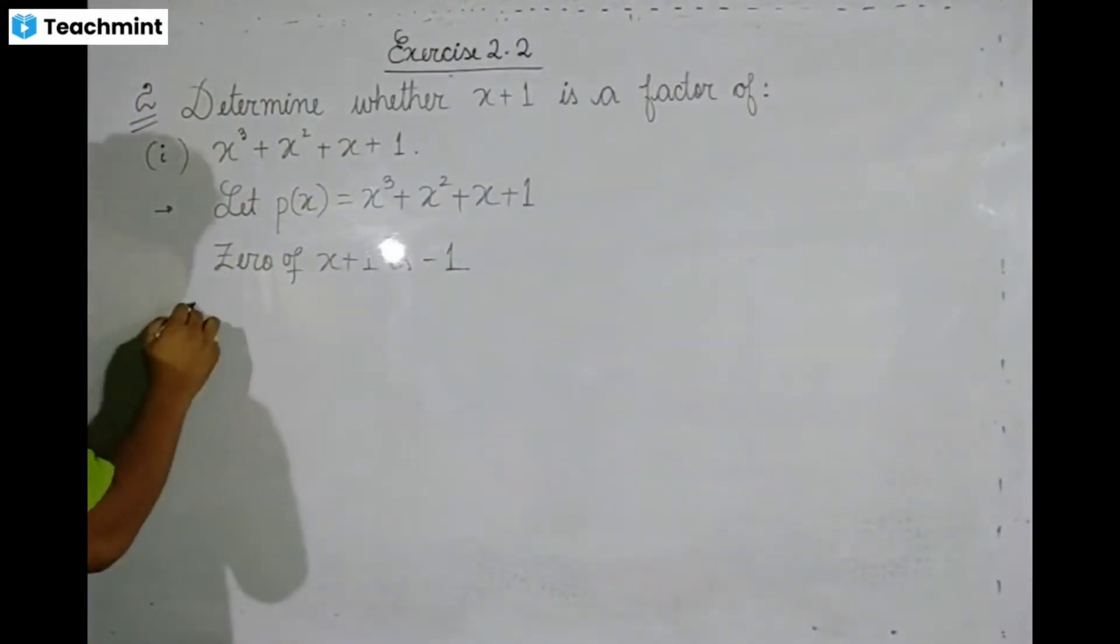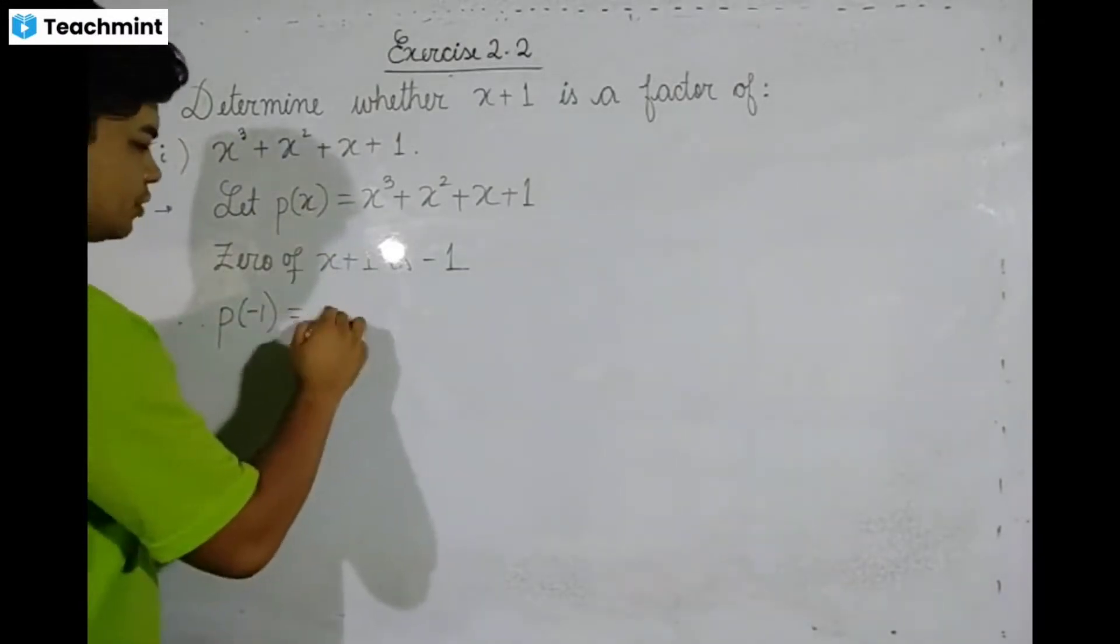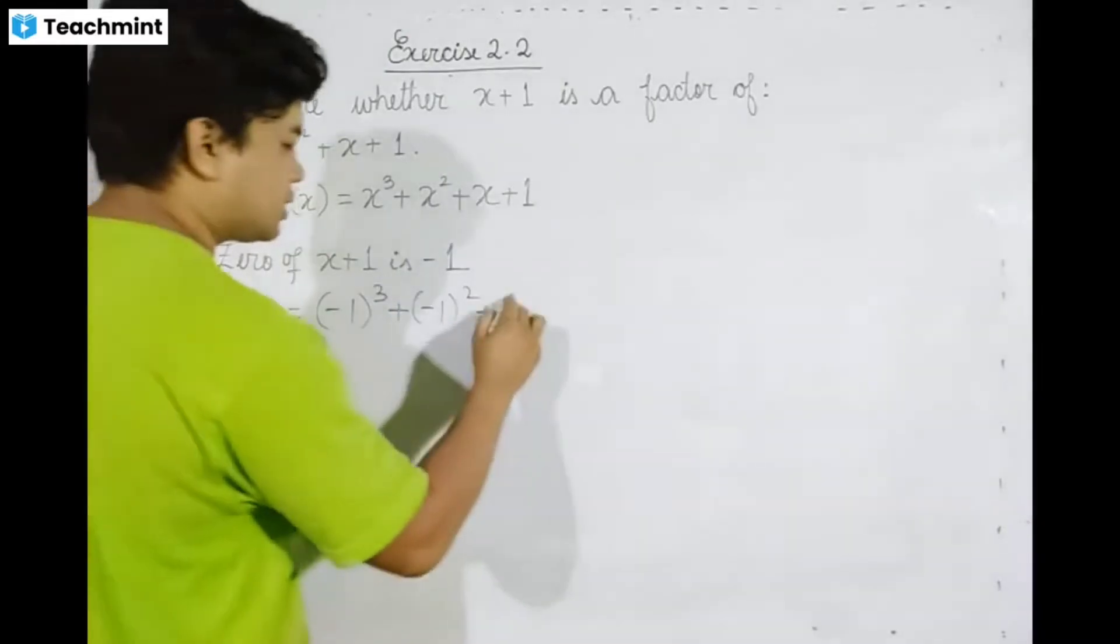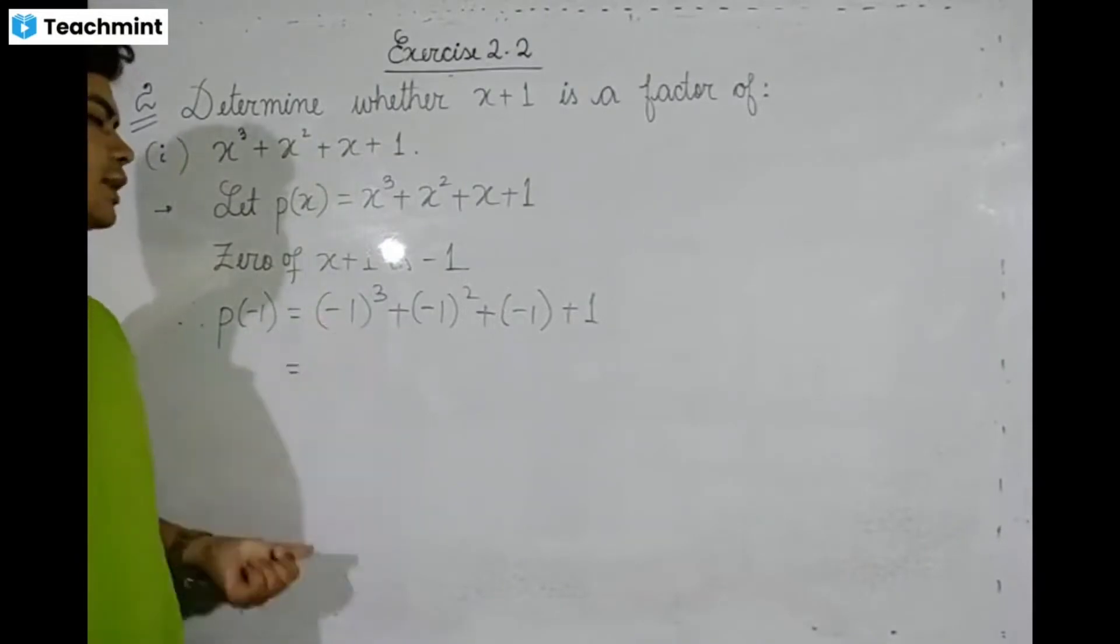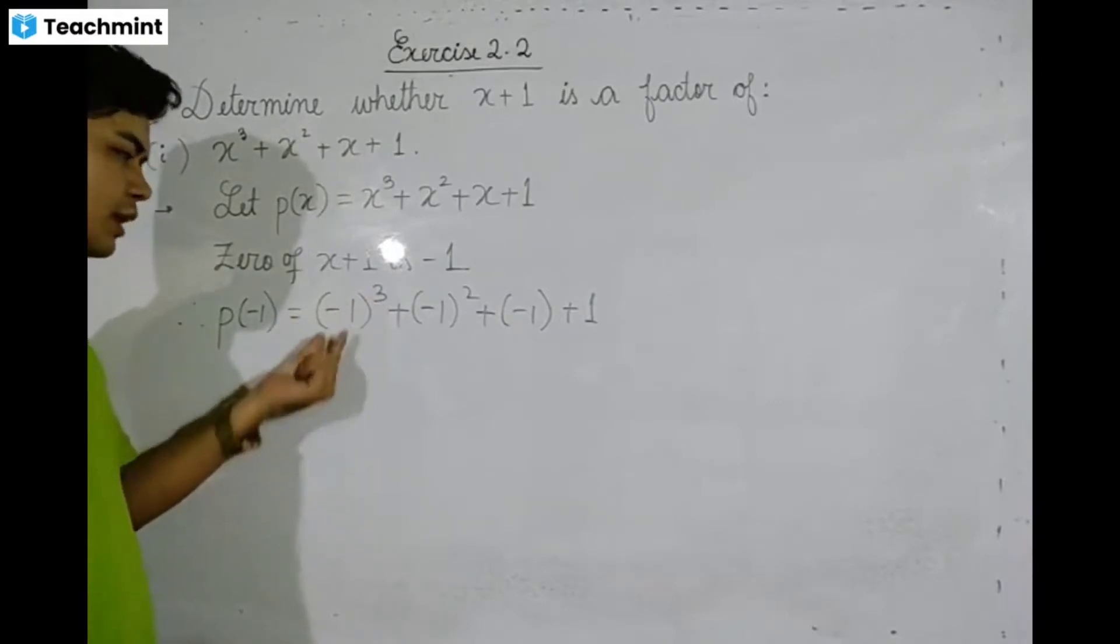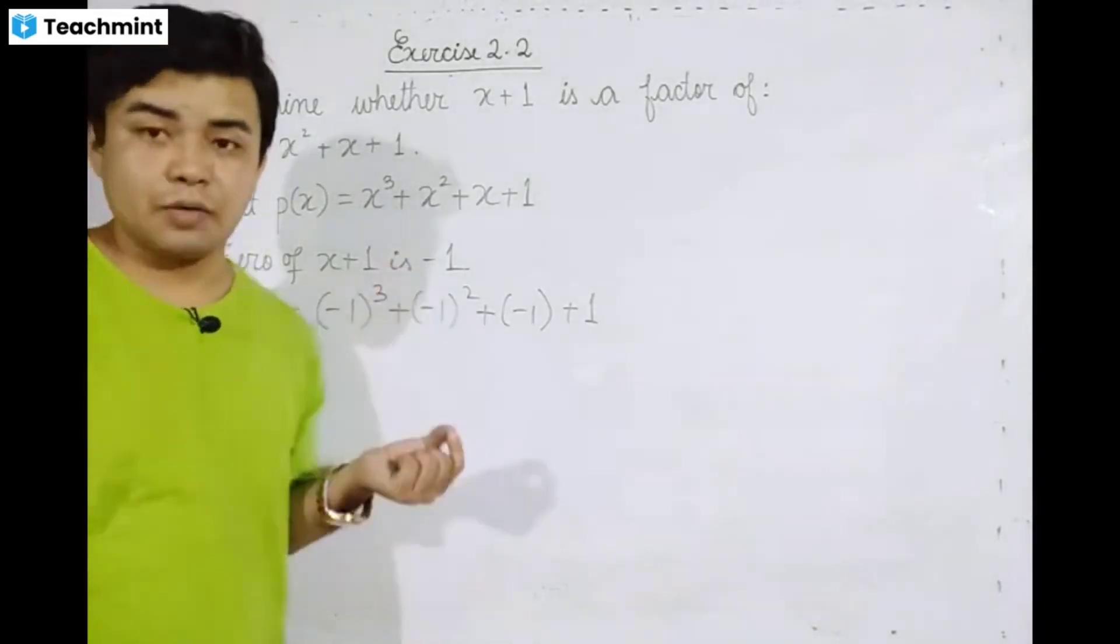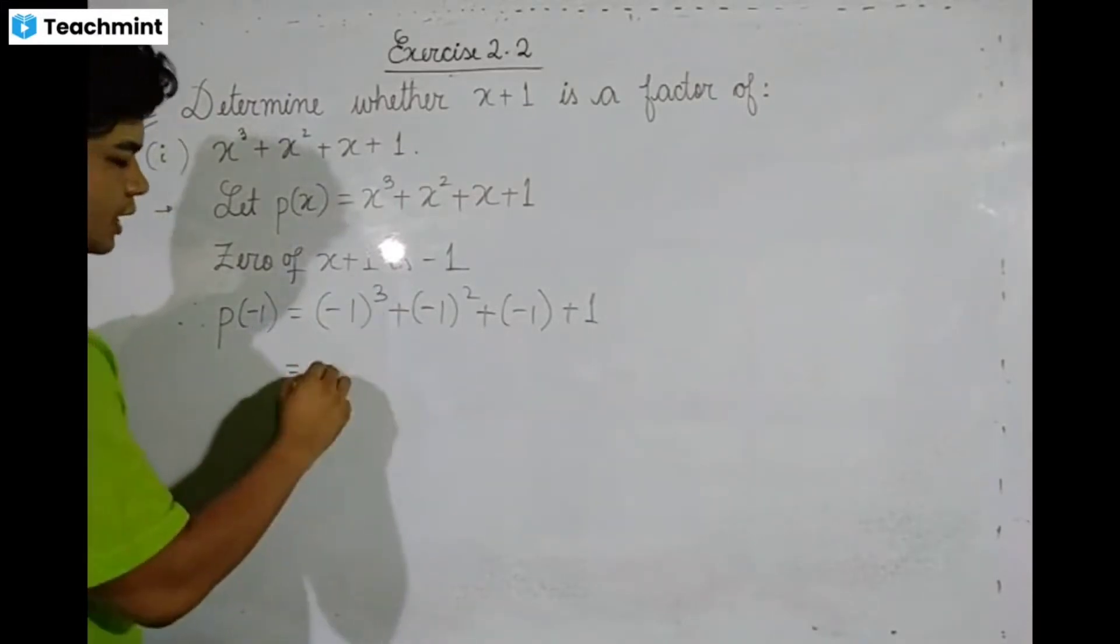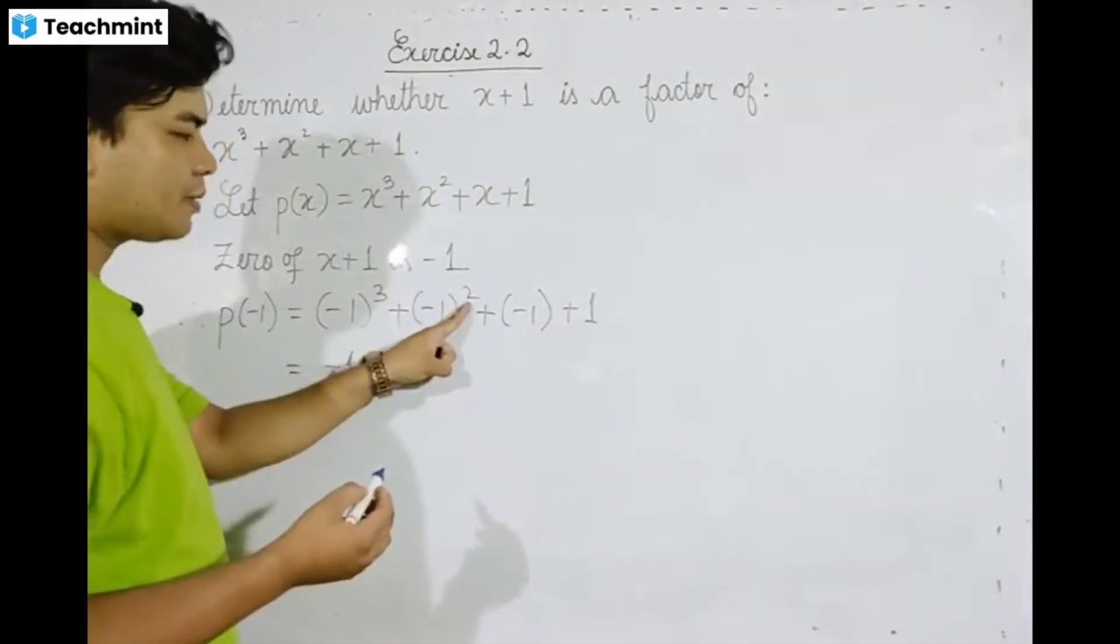So p of minus 1 equals minus 1 whole cube plus minus 1 whole square plus minus 1 plus 1. When you have minus 1 raised to a power, if the power is odd like 3, it gives minus 1. If the power is even, it gives plus 1.